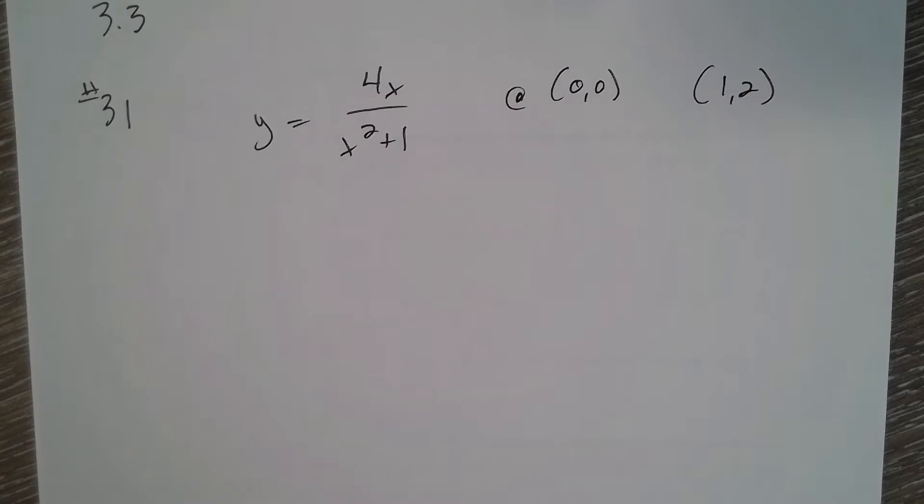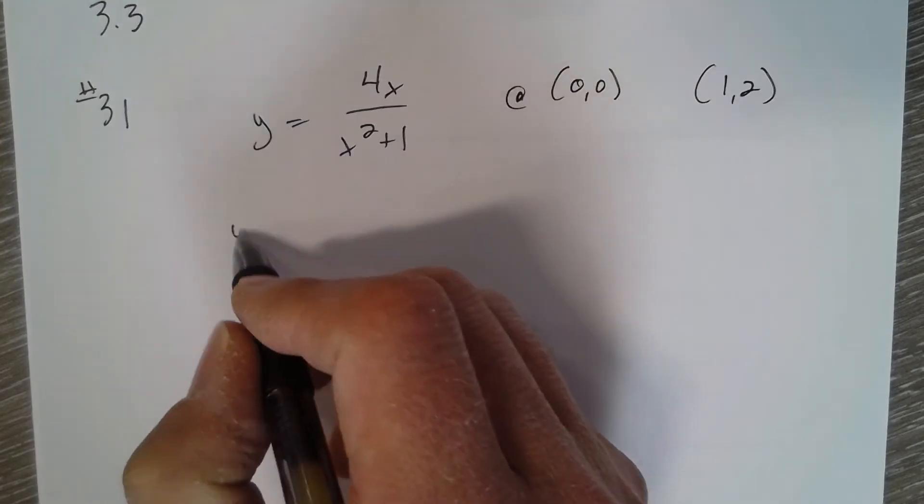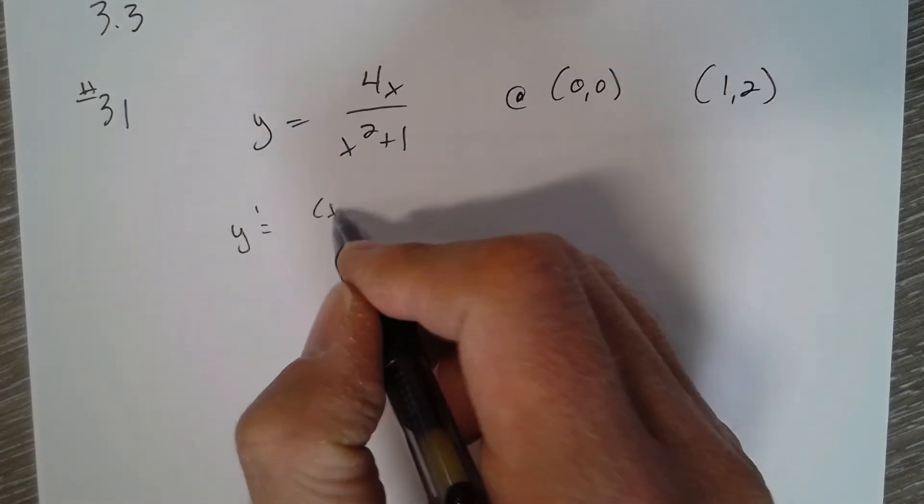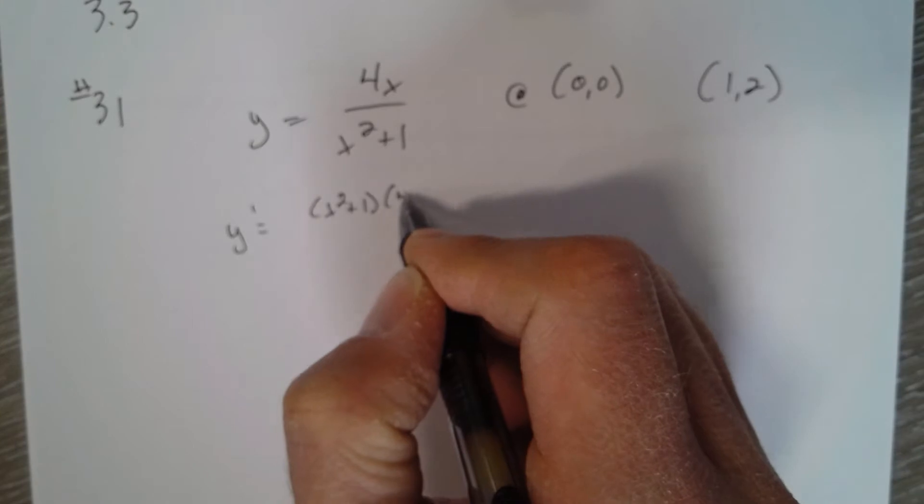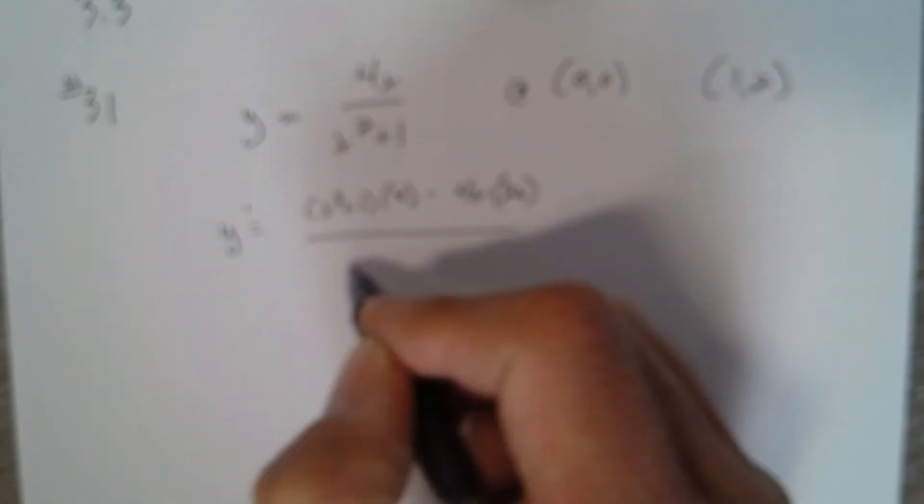They want a tangent line, okay. So let's find the derivative. Bottom times the derivative of the top minus the top times derivative of the bottom all over the bottom squared.